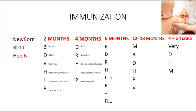At six months, we're going to use our B Dr. Hip plus flu. So that's going to be your hepatitis B, your DTAP, your rotavirus, your hemophilus influenza, your inactivated polio virus, and your pneumococcal plus the flu vaccine.